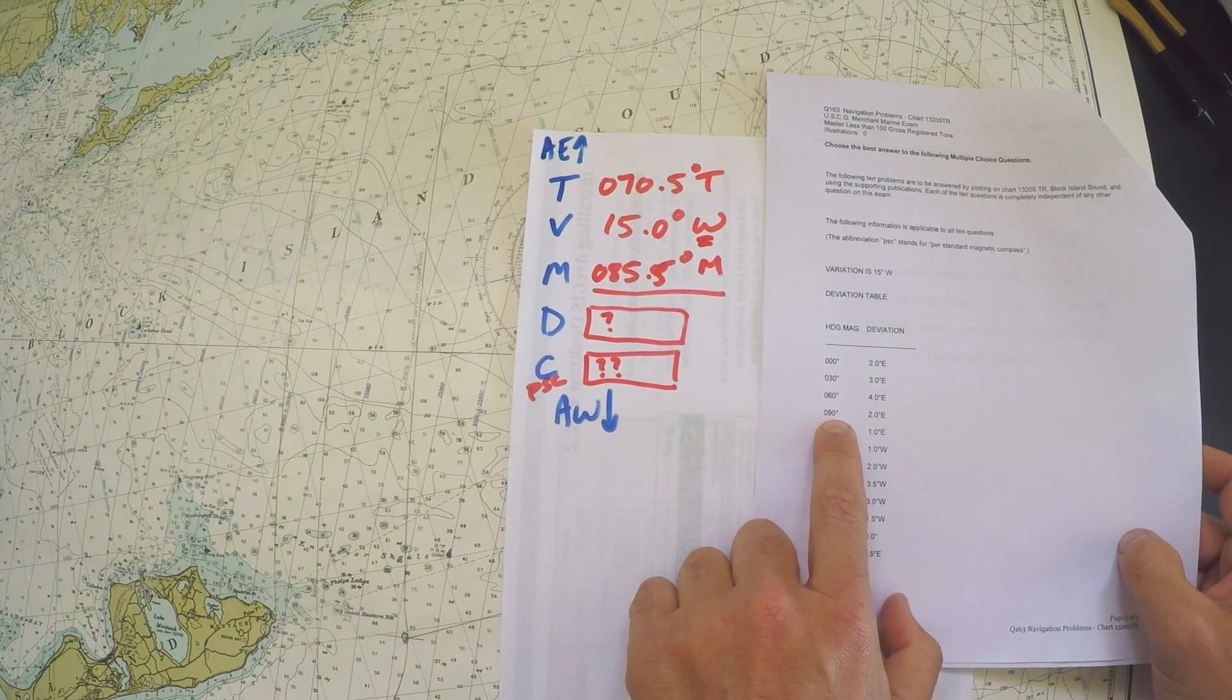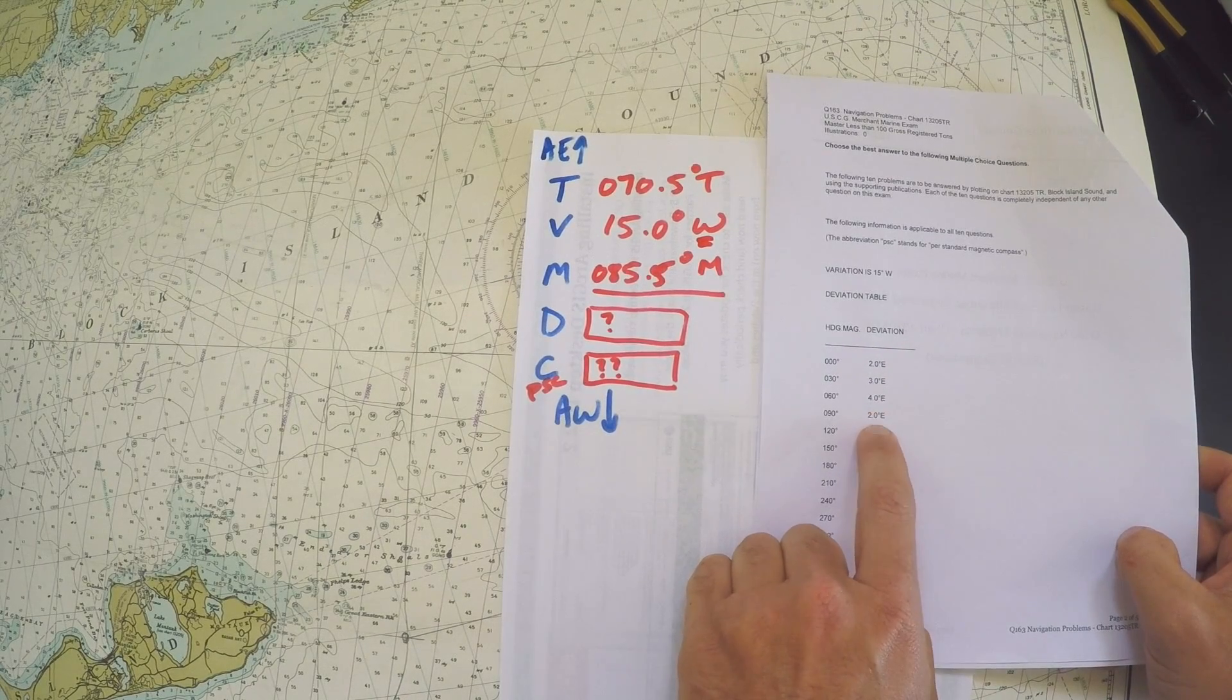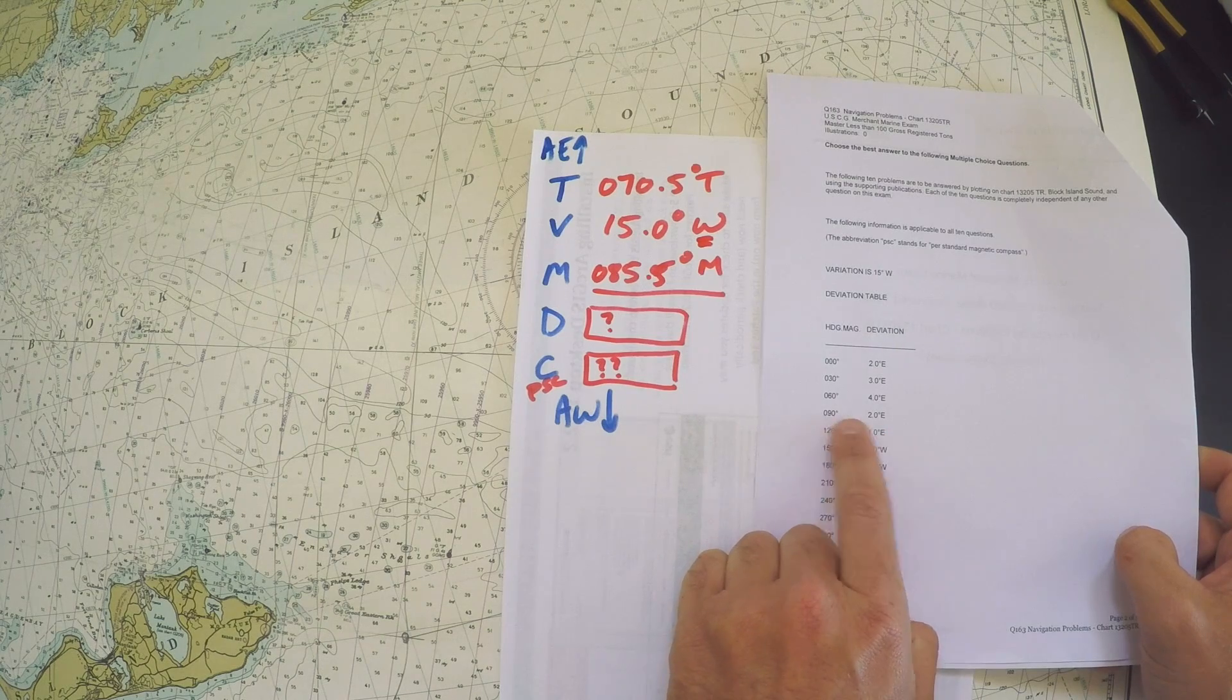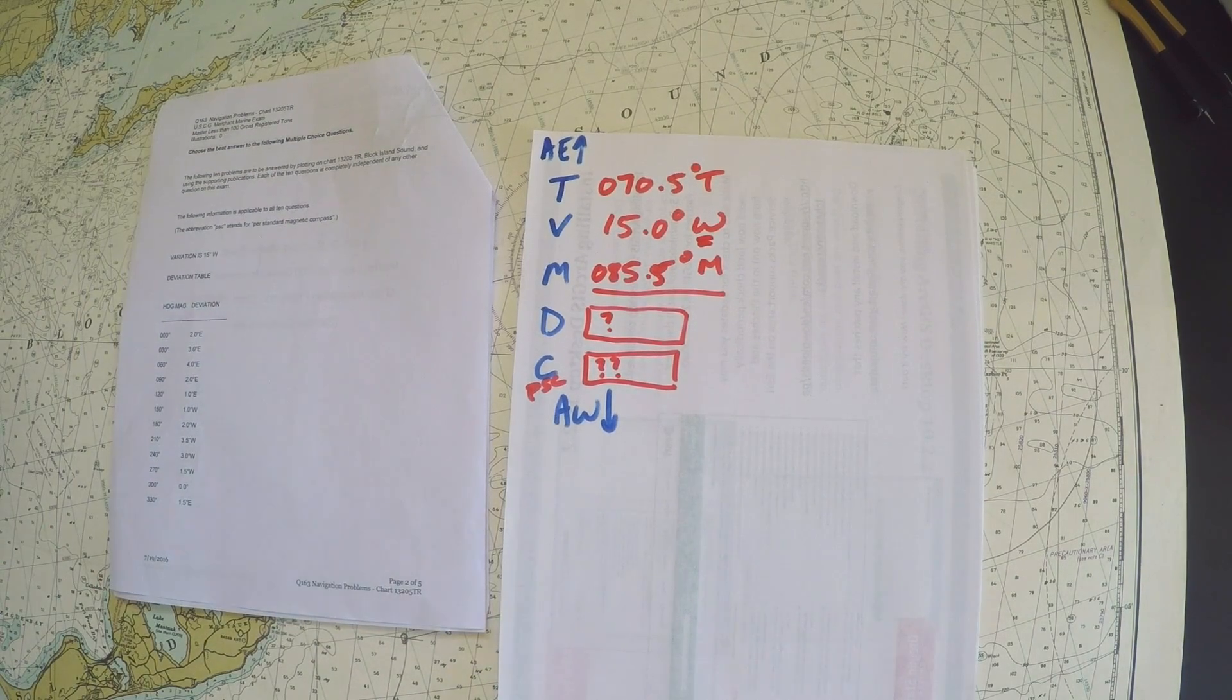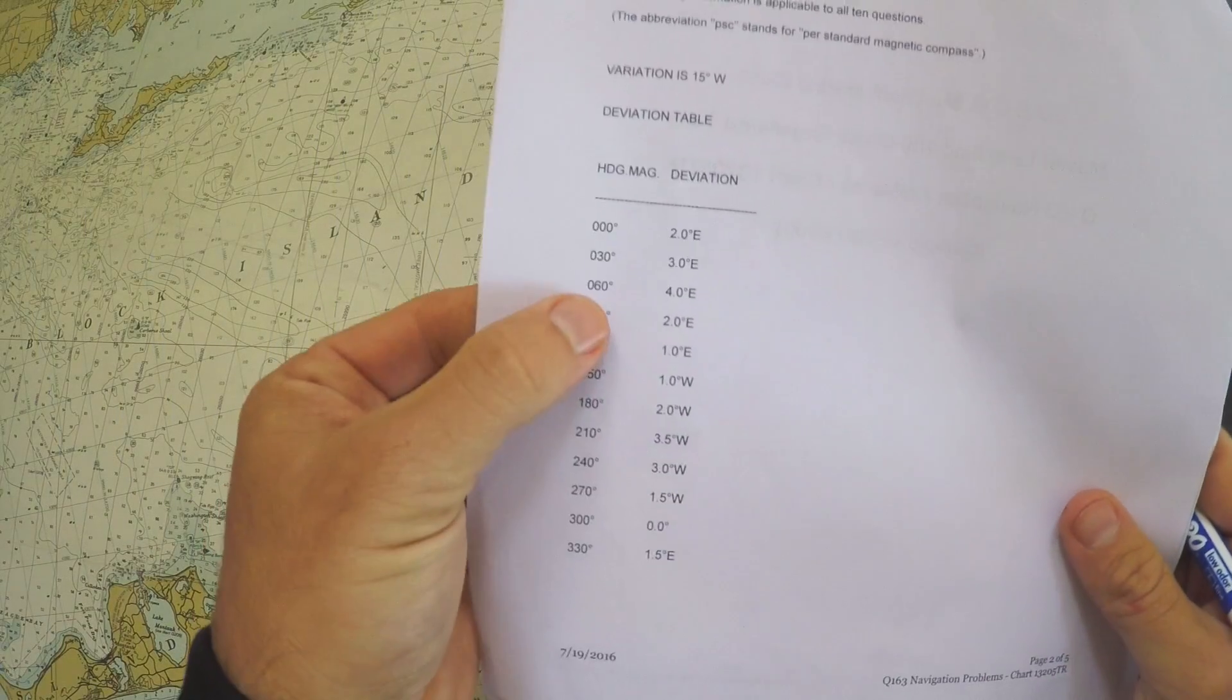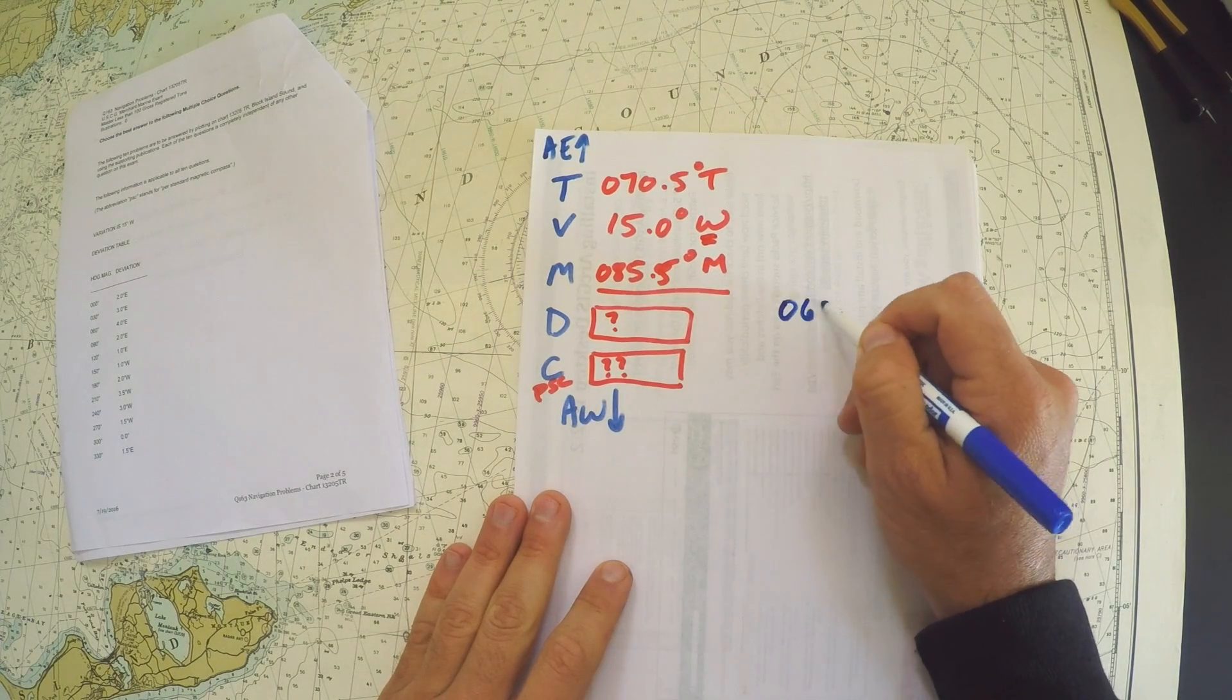The closest value is 090, so you might be tempted to choose the closest value of deviation, but if you want to get more accurate you should interpolate. Most of the time if you round and choose the closest deviation value you'll be okay, but to be correct we need to interpolate. We're just going to reproduce this deviation table onto our little worksheet here.